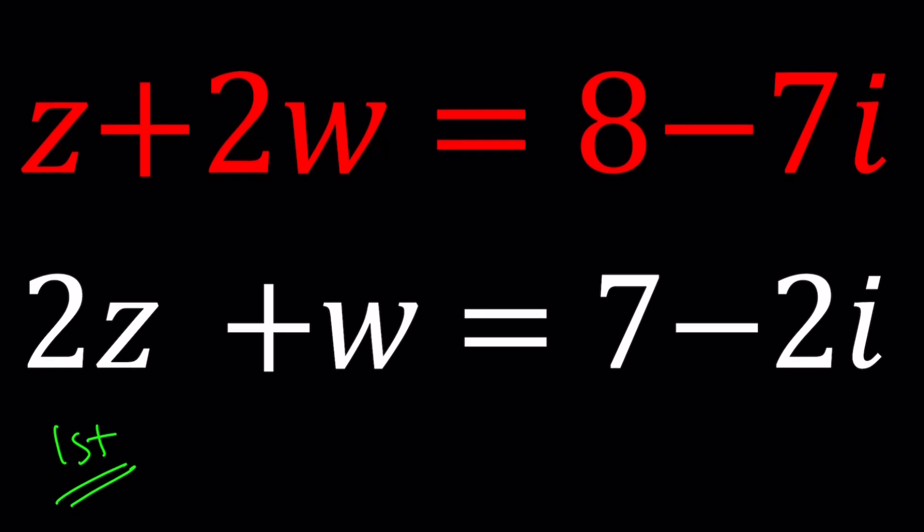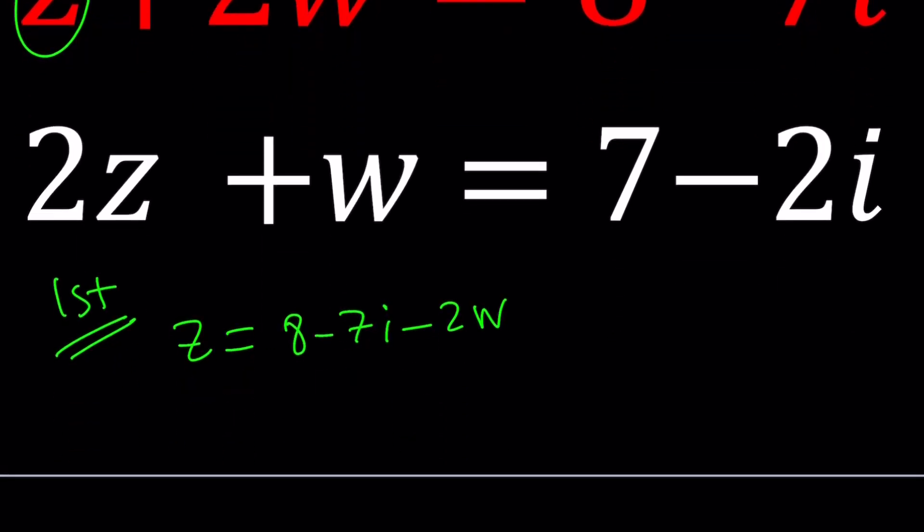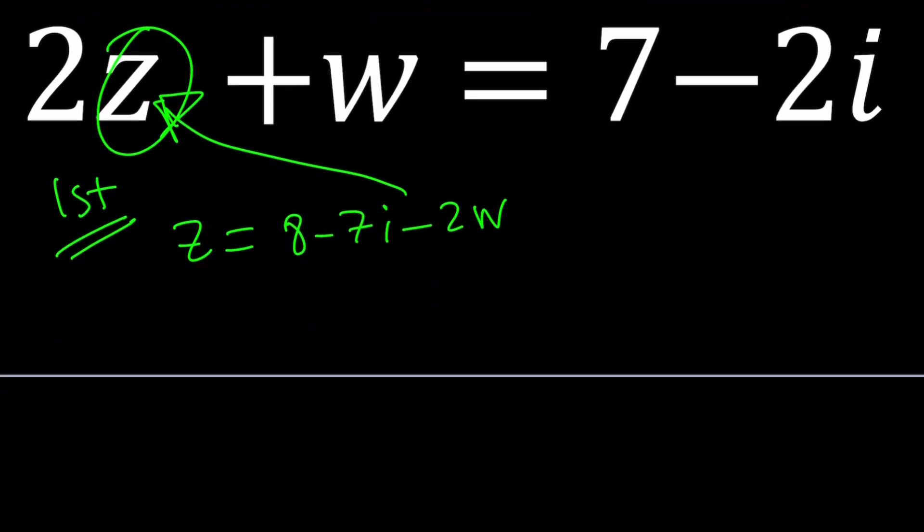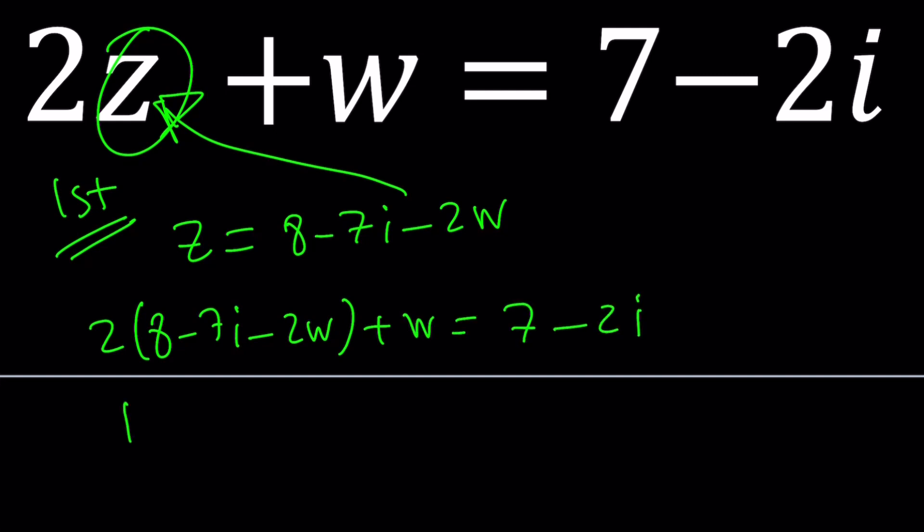Let's go ahead and isolate z from the first equation. The first equation I considered to be the top one. So z can be written as 8 minus 7i minus 2w. And then I'm going to substitute that here. That gives us 2 times 8 minus 7i minus 2w plus w equals 7 minus 2i. Let's simplify this.